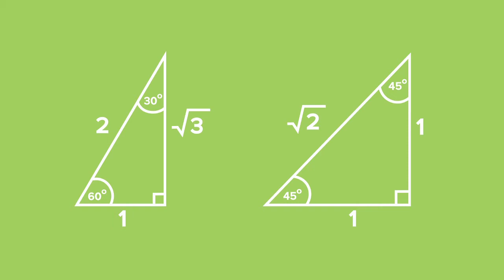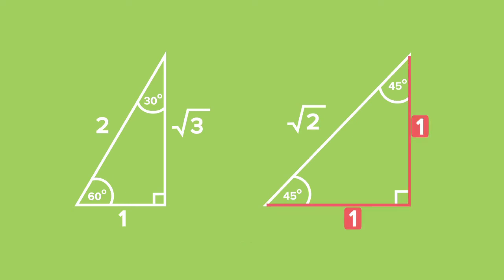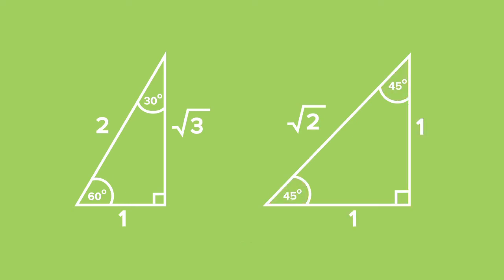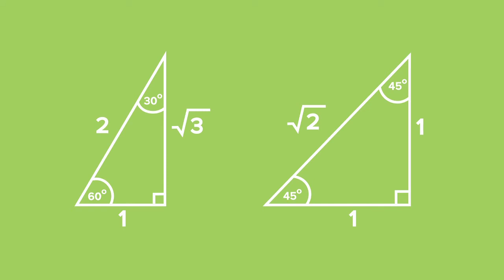In the same way, we can work out the ratios for a 45-degree triangle with a right angle. This helps us to remember the other special angles. We also note that the second triangle is an isosceles triangle, as it has two equal sides and two equal angles, and one different side and angle.